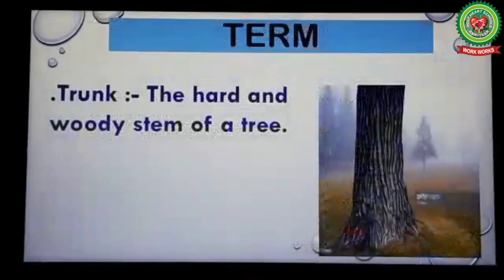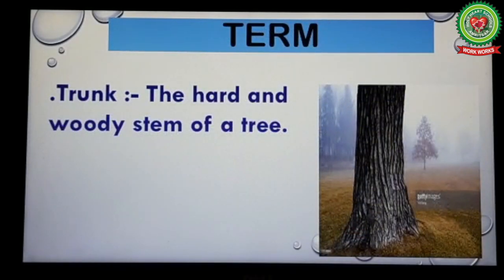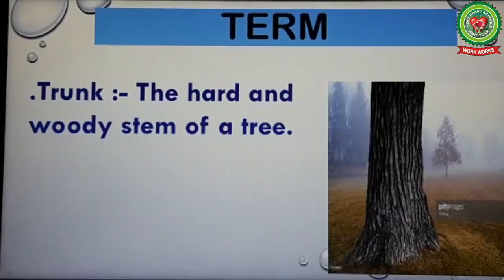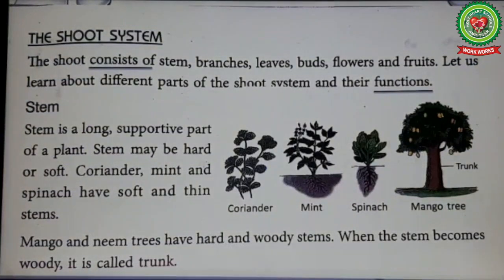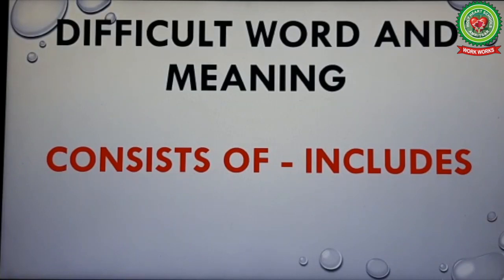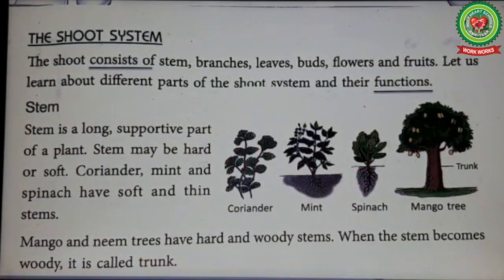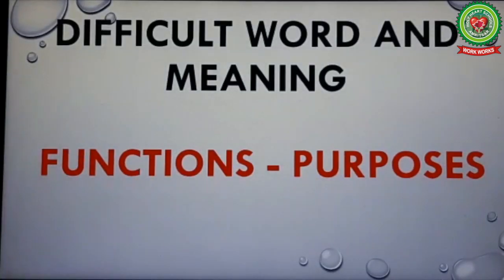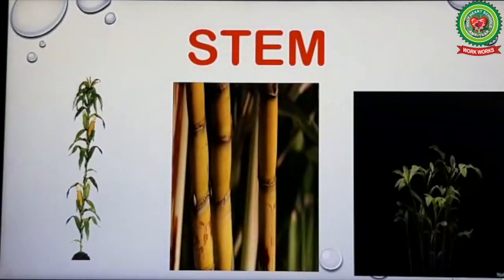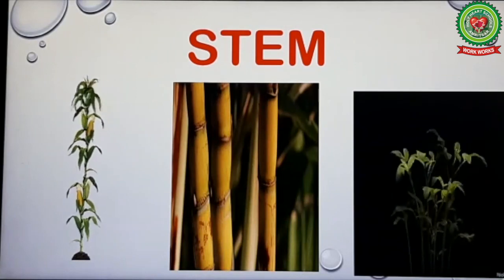First I will discuss the term of this topic — trunk: the hard and woody stem of a tree. Now let's start reading the shoot system. The shoot consists of stem, branches, leaves, buds, flowers, and fruits. Underline 'consists of' and write its meaning: includes. The stem is the main part of the shoot system and it grows above the soil.